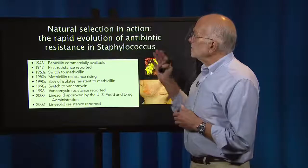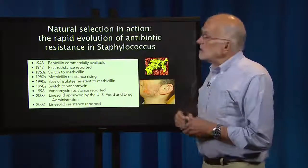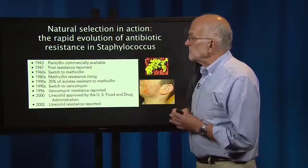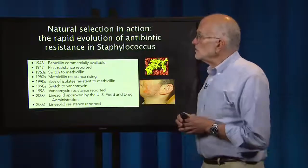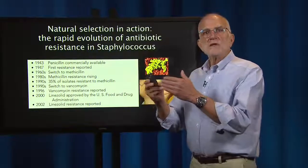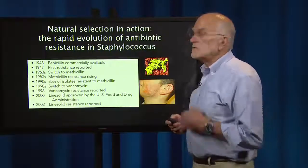Let's take a look at natural selection in action. The rapid evolution of antibiotic resistance in staphylococcus illustrates a standard history of introducing new drugs to combat bacterial infection. In 1943, penicillin became commercially available and staphylococcus was resistant by 1947. There was a switch to methicillin in the 60s; methicillin resistance was rising by the 80s, and by the 1990s 35% of isolates were resistant. There was then a switch to vancomycin; vancomycin resistance was reported by 1996. Linezolid was approved in 2000 by the FDA, and by 2002 linezolid resistance was reported in staphylococcus. This is representative of the way that bacteria repeatedly evolve resistance in response to the introduction of antibiotics.